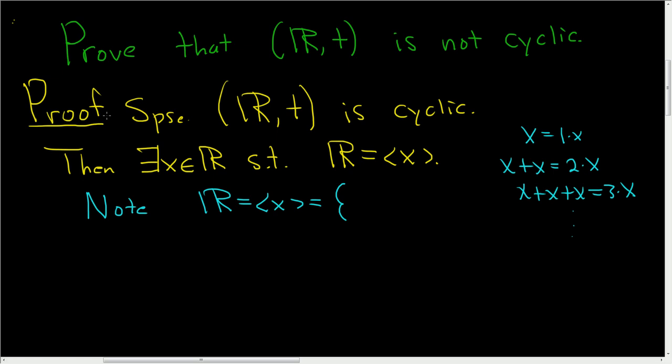So in this group, this set means all powers of x. It's a set containing all of the powers of x. So they look like nx. You have 1x, 2x, 3x, nx, such that n is an integer. That's what it means to be a power of x in this particular additive group.